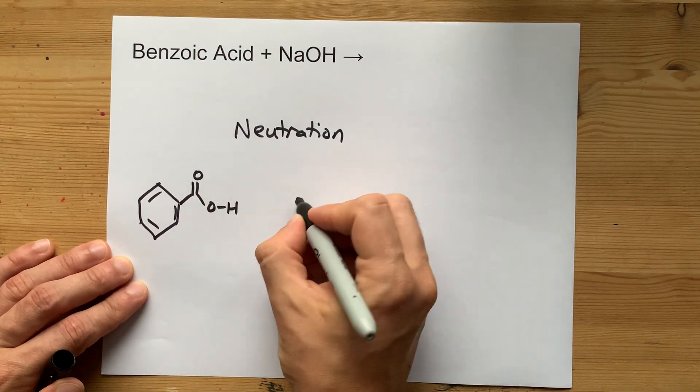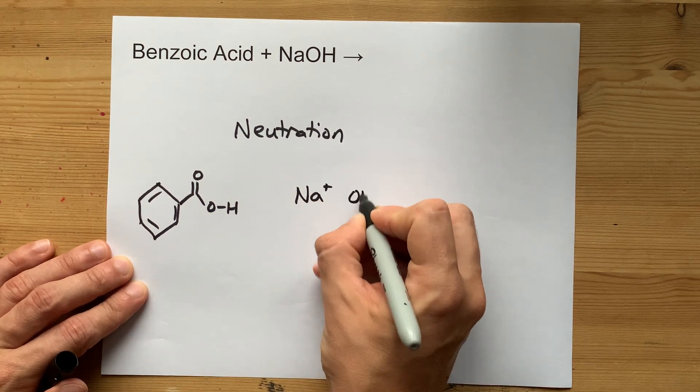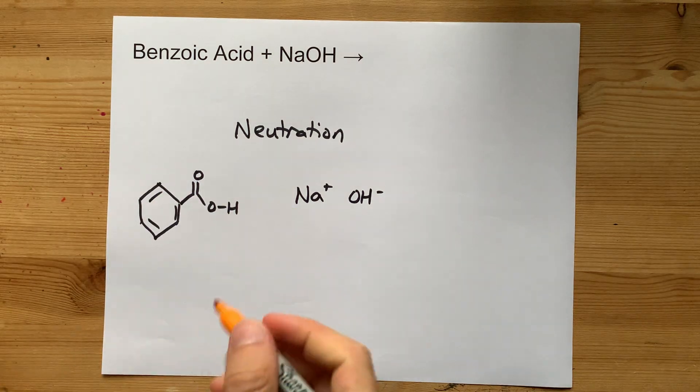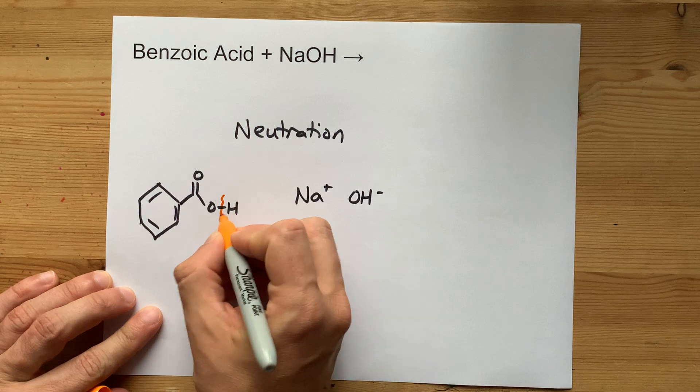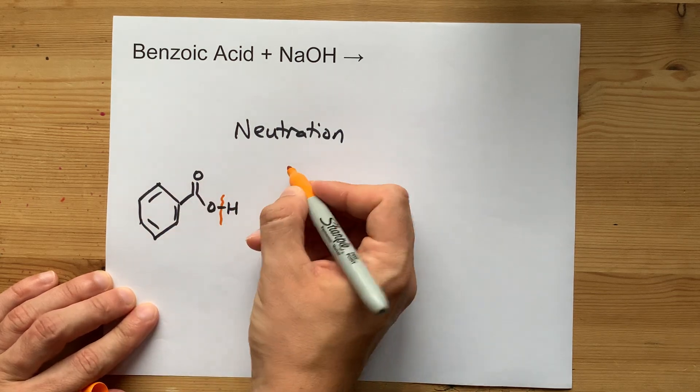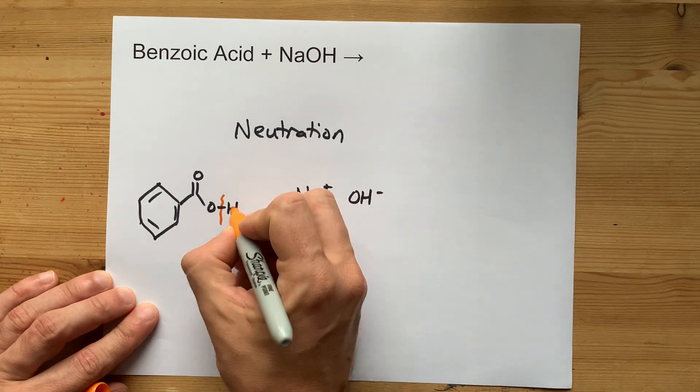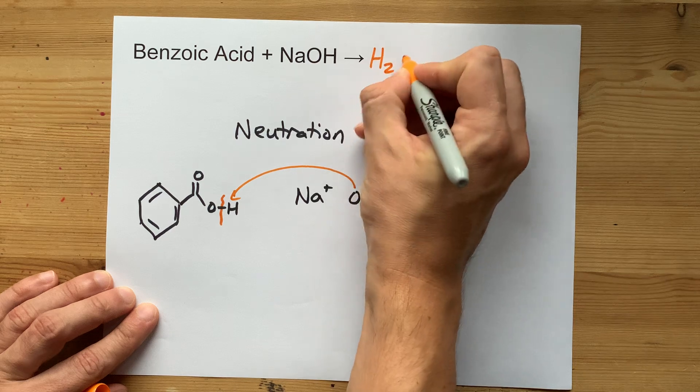And NaOH is more of an ionic compound. You've got an Na+ and you've got an OH- as well. Now, neutralizations are what happens when the H of an acid gets donated somewhere, and actually that H+ and the OH- are going to be attracted to each other. That's going to give you water.